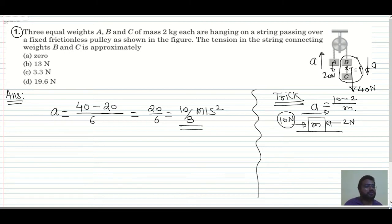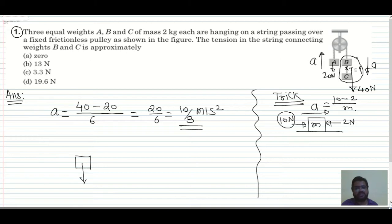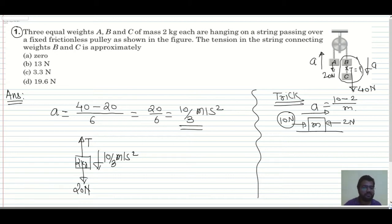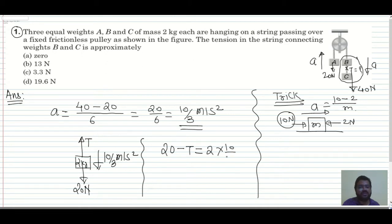I took 40 because B and C each are 2 kg: (2+2)×10 = 40 N, and A gives 20 N. Now draw the free body diagram of block C: weight 20 N downward, tension T upward, acceleration 10/3 m/s² downward. Since 20 N is greater than T, we write: 20 − T = 2 × (10/3), so T = 20 − 20/3 = 40/3 N.